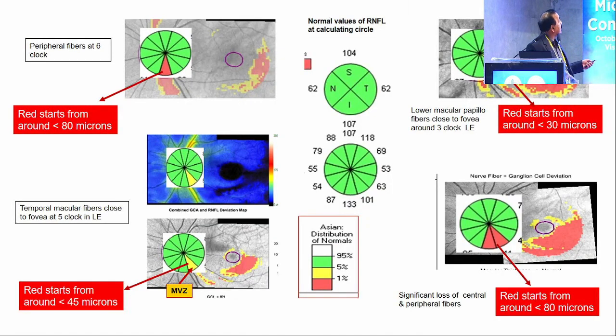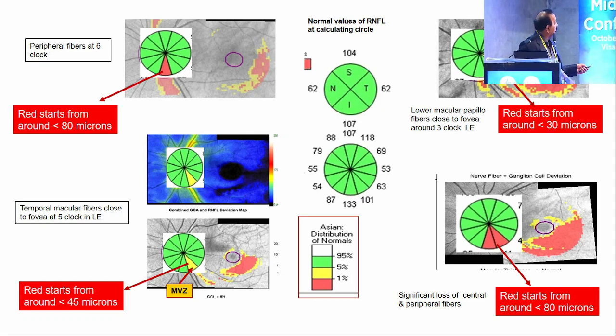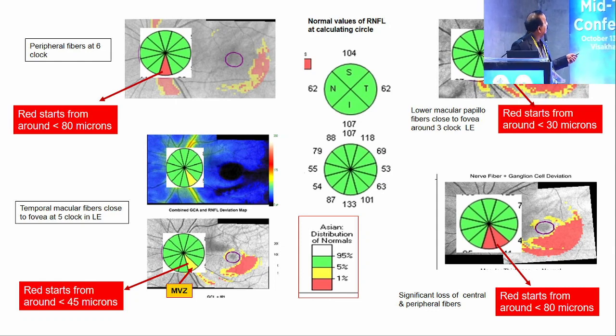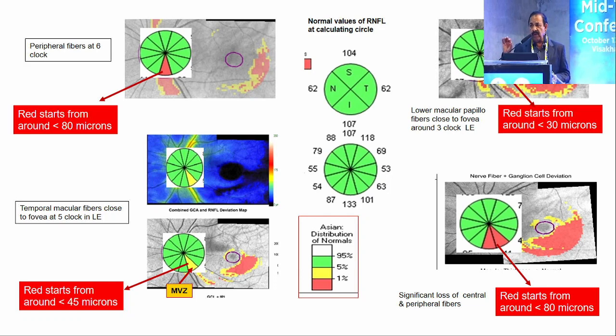We know this is the 6 o'clock, it corresponds to the peripheral fibres. The temporal fibres of the macula nearer to the fovea will be entering here, the macula papillary bundle. If you see the p-value, the red appears when the thickness of both the quadrants, these quadrants around 80 microns, the red appears. You can forget about the yellow because yellow got very narrow range, the p-value 1% to 5%. There is a lot of overlapping of yellow with red and yellow with green. Don't give much value to the yellow. Basically there are only two: green and red.